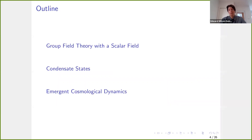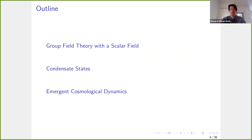Today, this talk will be split into three parts. First, I'll go over group field theory with a scalar field. Because we're interested in cosmology, we have to include some matter field. From classical general relativity, we know that if you're interested in a homogeneous and isotropic spacetime, you need some matter field to have non-trivial dynamics — if it's vacuum, you just get Minkowski space. Then I'll say a bit more about condensate states: first why we're interested in them, and then some of their properties. Finally, I'll show how we can extract emergent cosmological dynamics from these condensate states.